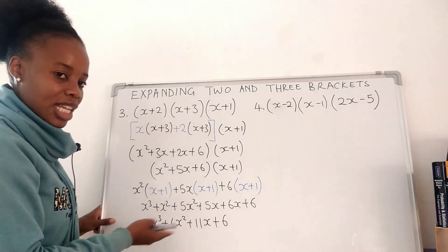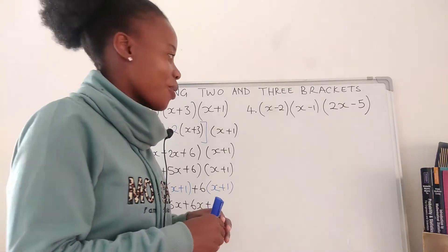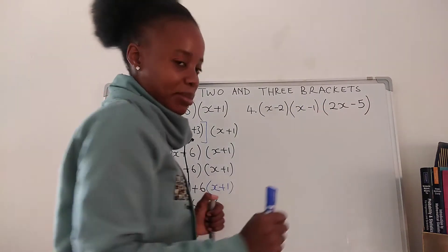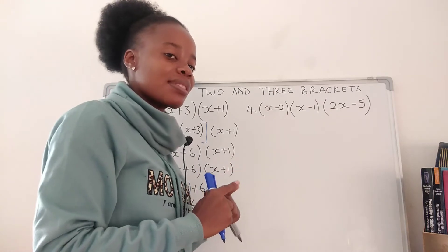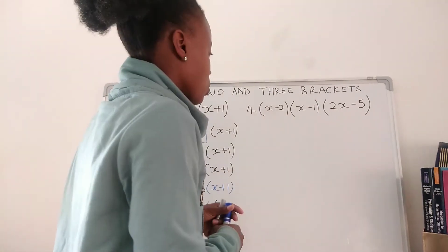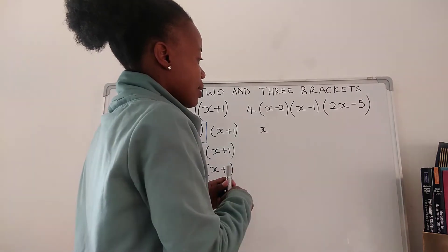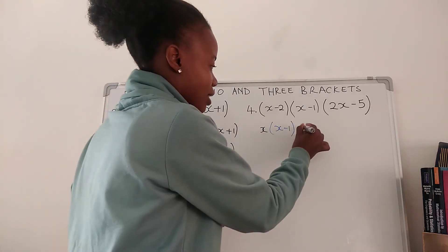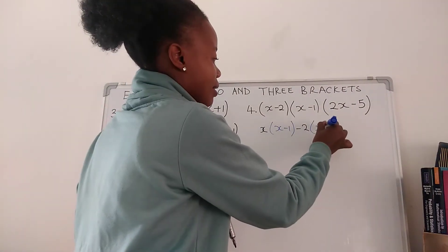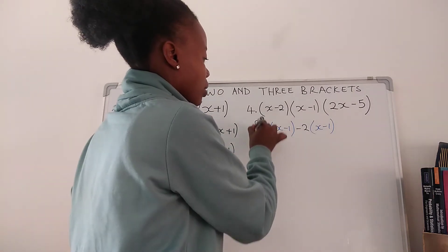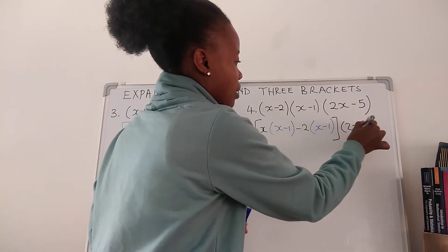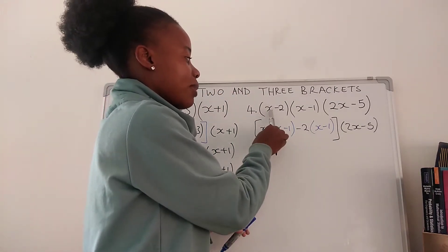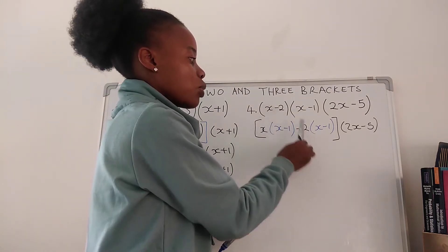Now let's get to number four. Number four: we have three brackets — (x − 2) times (x − 1) times (2x − 5). The first thing: deal with the first two brackets. So we're going to have x(x − 1) and negative 2(x − 1), with (2x − 5) still on this side. We multiplied x with everything on this side and negative 2 with everything on this side.